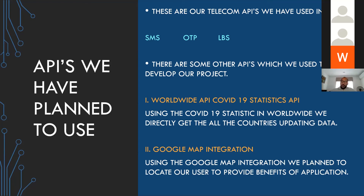The other APIs we use to develop our project include the worldwide COVID-19 statistics API, which can directly get updated data from all countries. We also integrate Google Maps to locate users — patients or people getting vaccinated — and to provide vaccination places for proper vaccination locations.